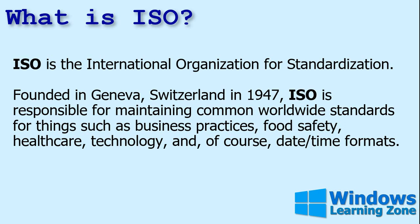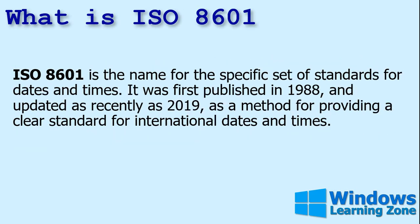The ISO is responsible for everything from business practices and food safety to healthcare technology and of course date-time formats. ISO 8601 is the name for a specific set of standards for dates and times. It was first published in 1988 — yes, we should have been using it all this time — and was recently revised as of 2019. It provides a clear standard for international dates and times.